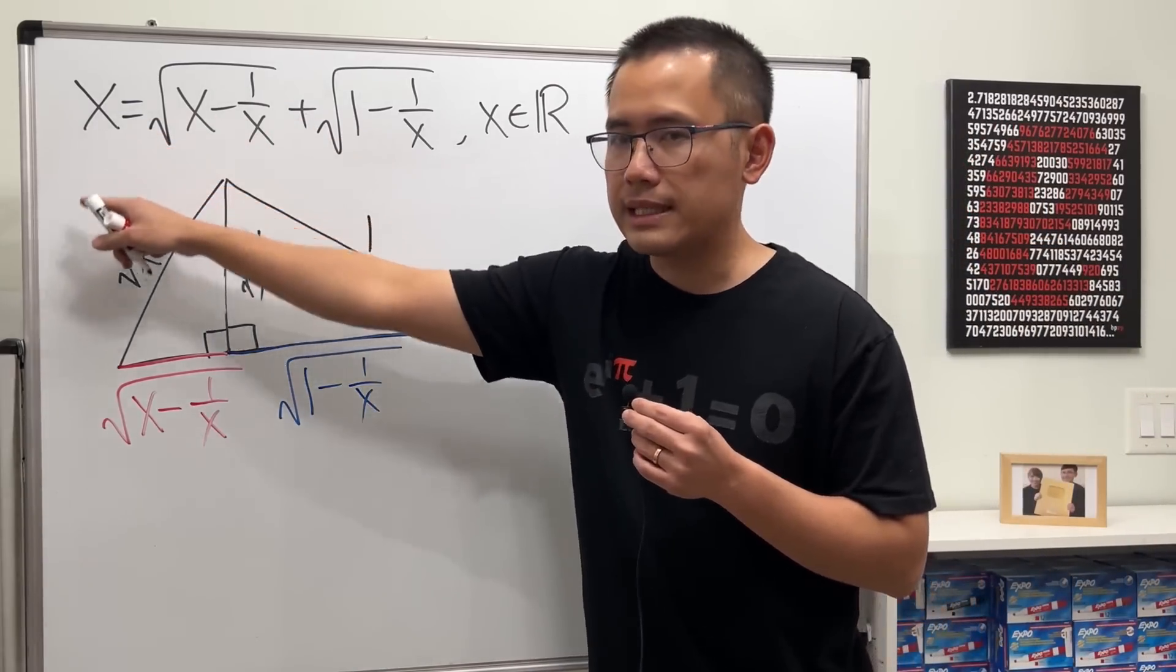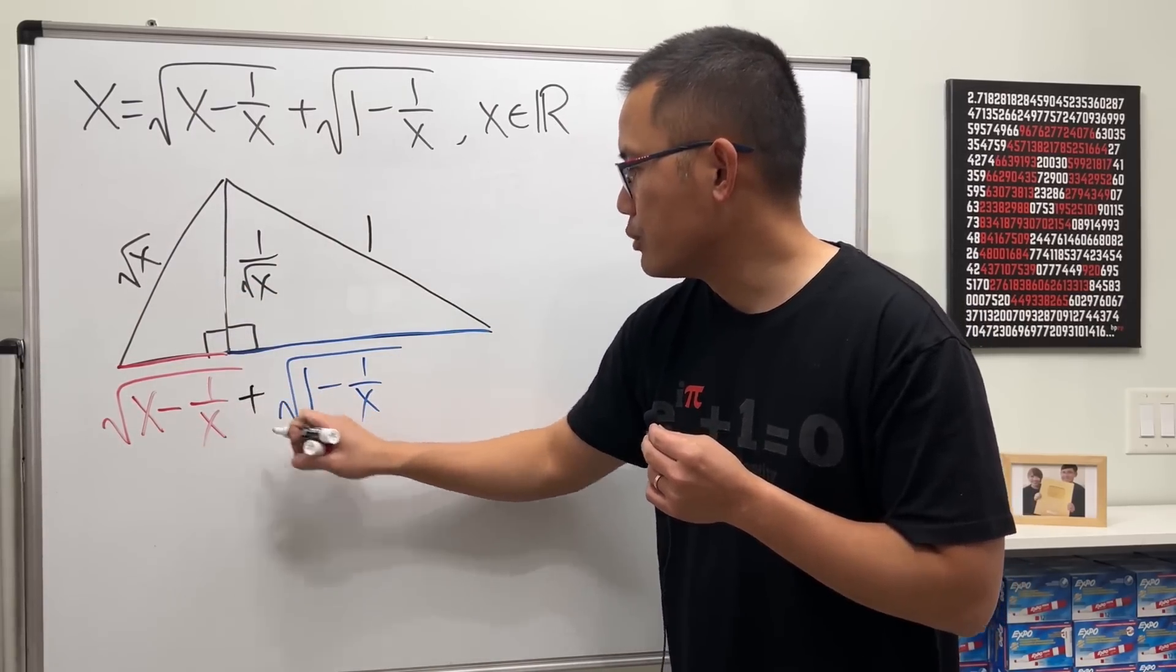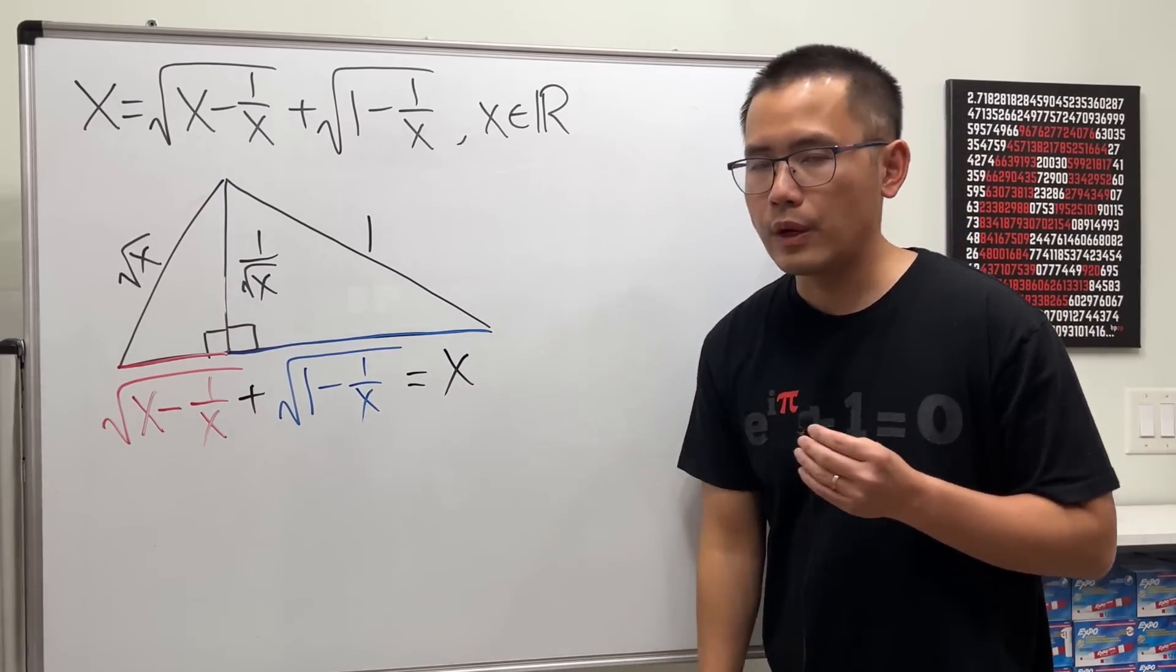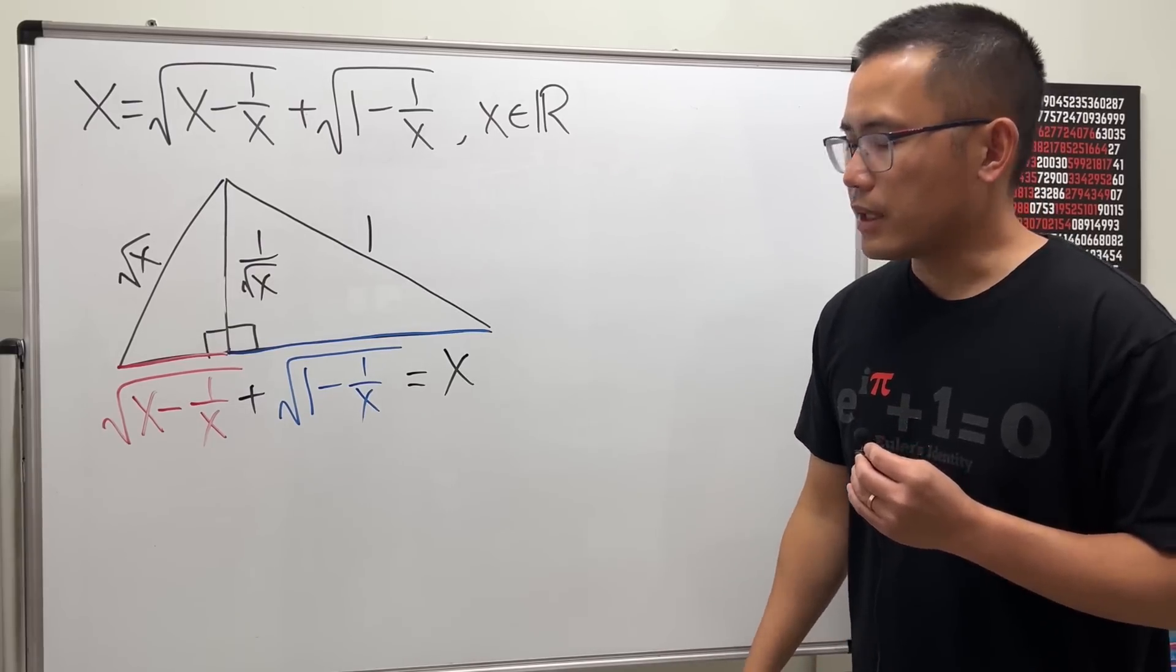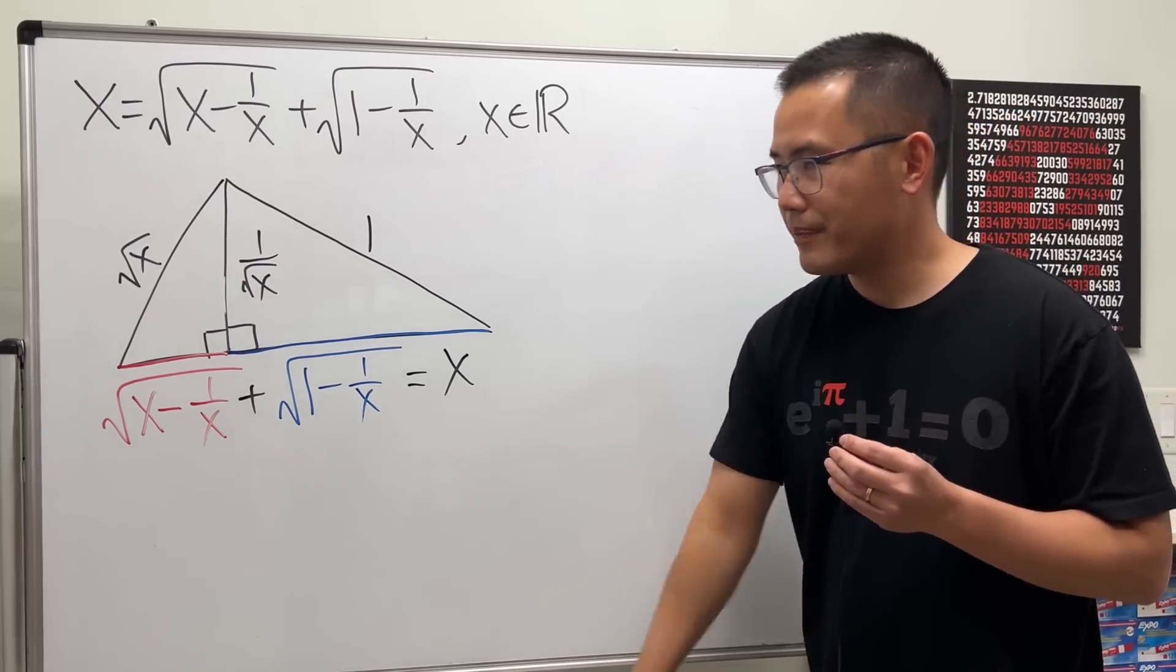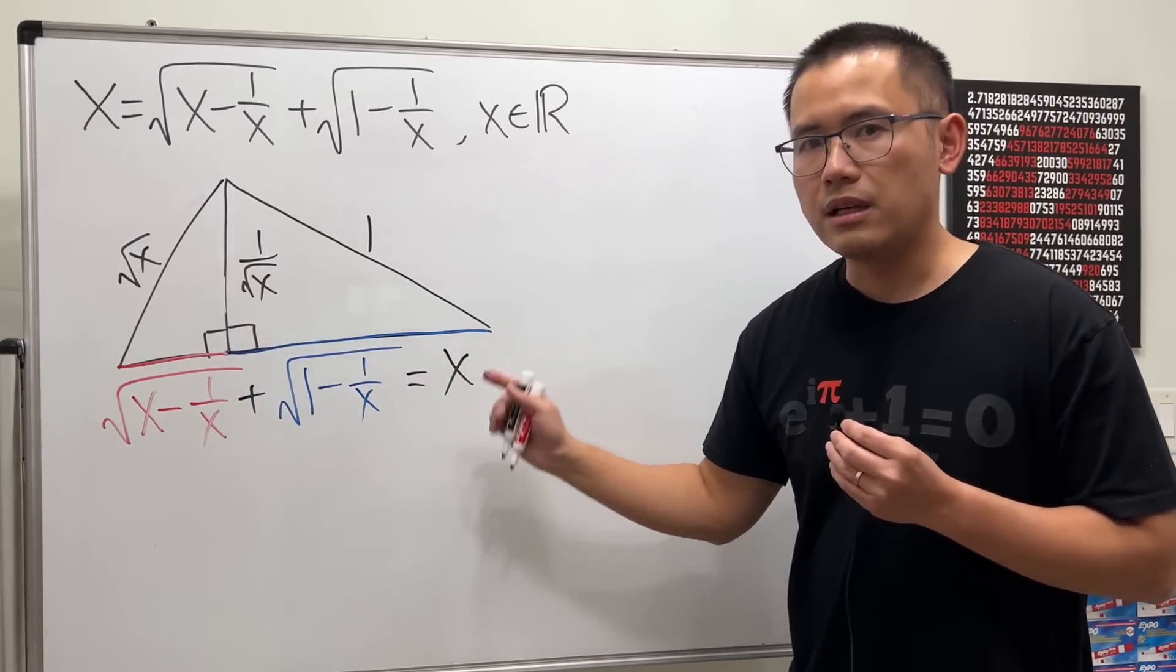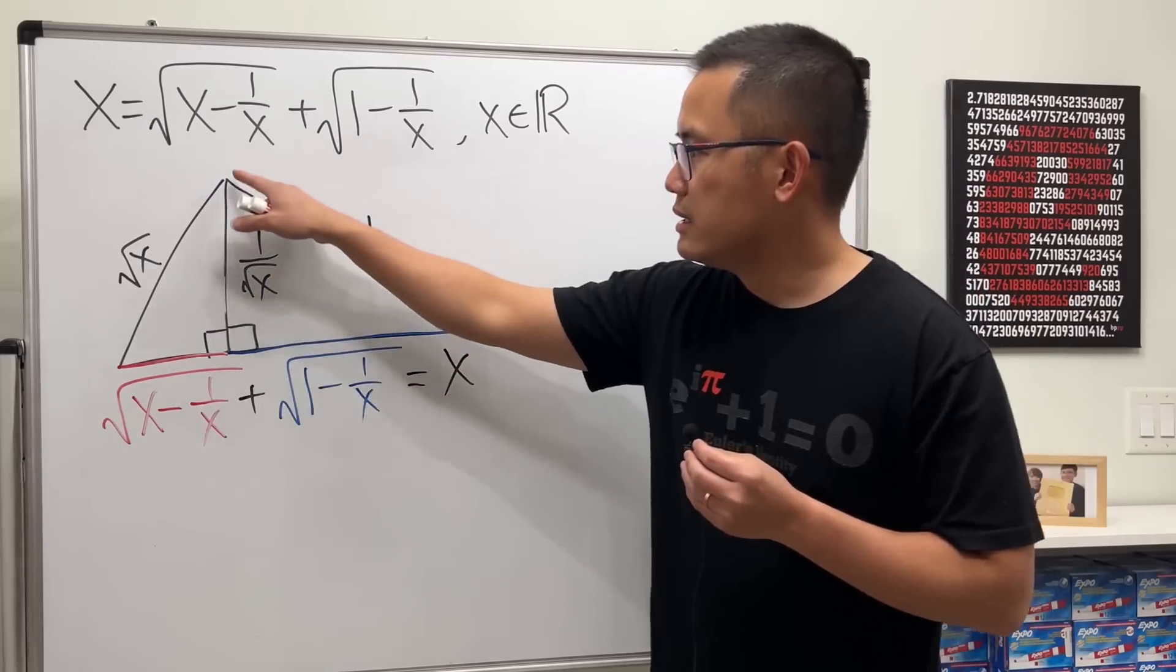So we want to have the red part plus the blue part being equal to x. This is our triangle that we are looking for to satisfy. Okay, so how can we continue? Well, let's have a look. Notice this whole thing right here is the base of the big triangle—we can just look at that as x. This is the height, which is 1/√x.